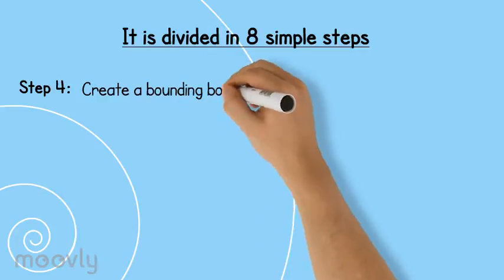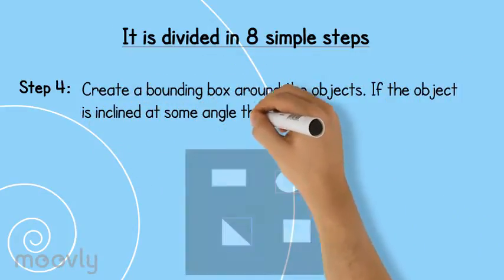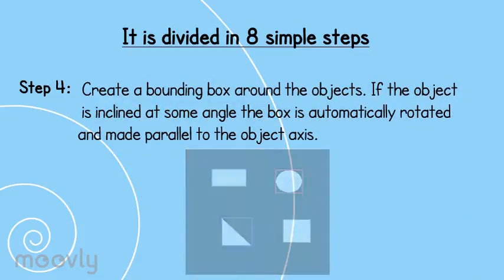Step 4. Create a bounding box around the objects. If the object is inclined at some angle, the box is automatically rotated and made parallel to the object axis.